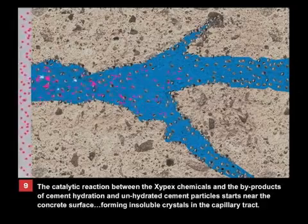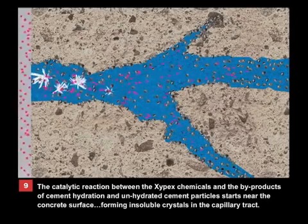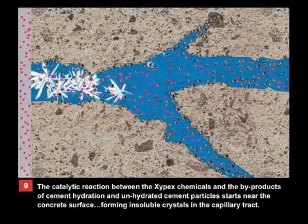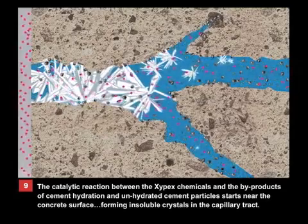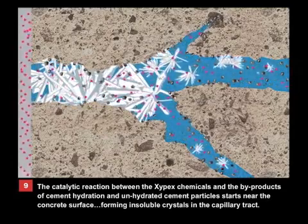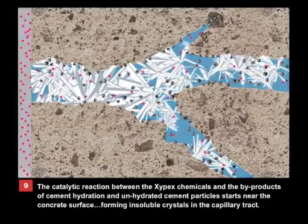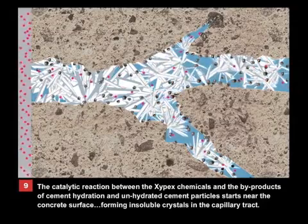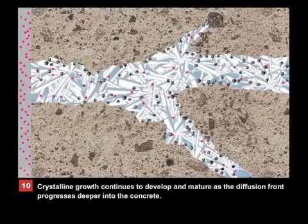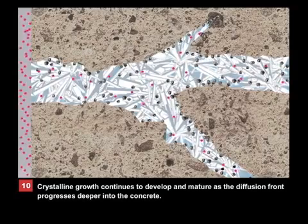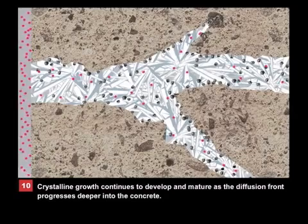The catalytic reaction between the Xypex chemicals and the byproducts of cement hydration and unhydrated cement particles starts near the concrete surface, forming insoluble crystals in the capillary tract. Crystalline growth continues to develop and mature as the diffusion front progresses deeper into the concrete.